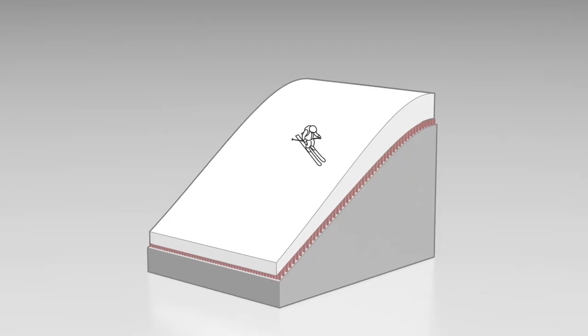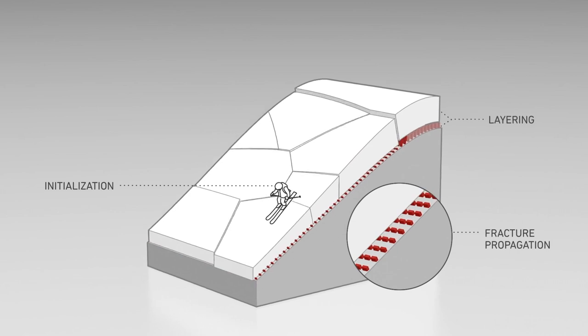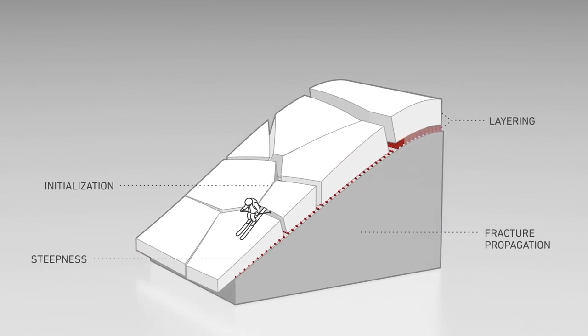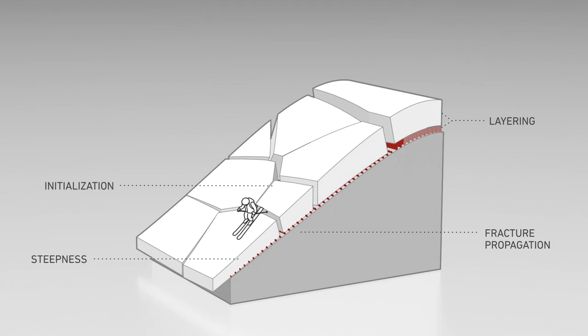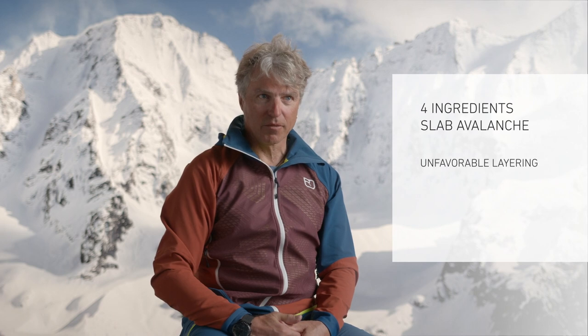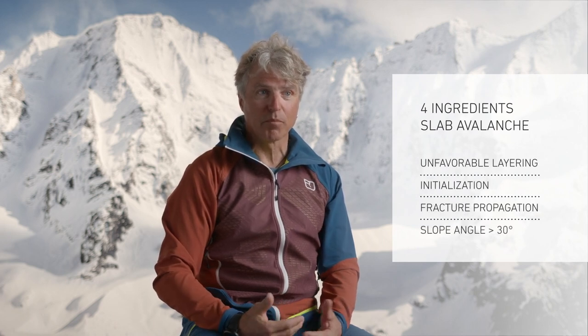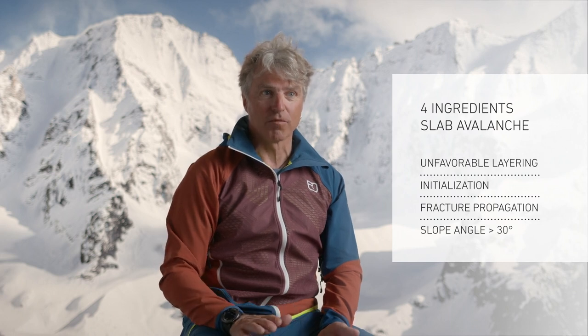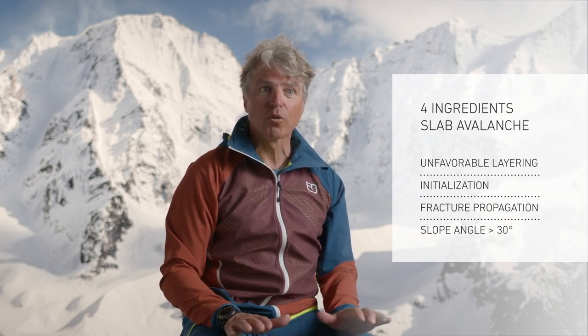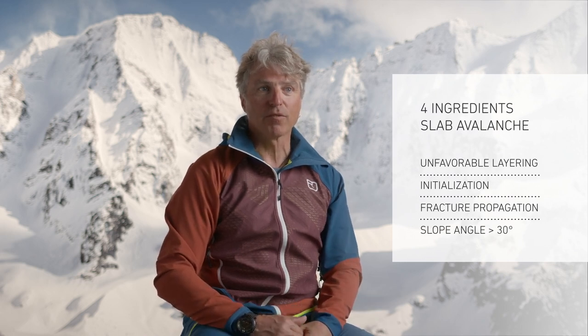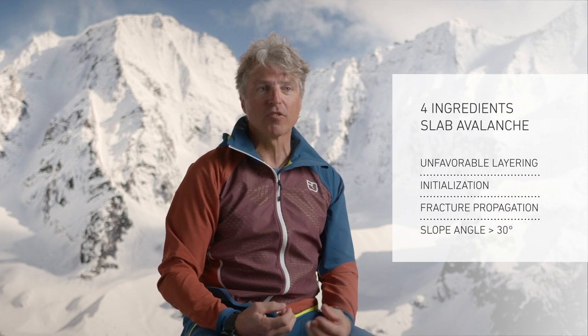Because skiers often trigger the snow slab themselves, they are right in the middle of it, rarely having a chance to ski out sideways. For a snow slab to form, we need four ingredients. The first is unfavorable layering — we need the slab itself, this slab of snow that slides down, on top of a soft, weak layer. The second is a skier, or stress element — the initiation, someone who triggers the slab. The third is the ability of the slab to propagate the crack in the weak layer. This way the slab gets really big and can release in one go — this ability to propagate is a particularly characteristic and difficult-to-assess criterion for these snow slabs.